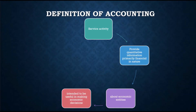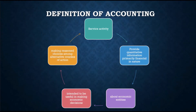The role of accounting in business is to provide information for managers and owners to use in operating the business. In addition, accounting information allows business owners to assess the efficiency and effectiveness of their business operations. Because of accounting, owners making economic decisions can make reasoned choices among alternative courses of action — not limited to just one choice, but justified toward the most reasonable option to succeed in their business.